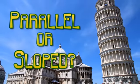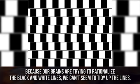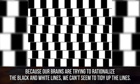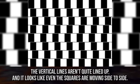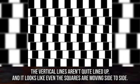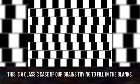Parallel or Sloped. Are these lines parallel or do they slope downwards? Because our brains are trying to rationalize the black and white lines, we can't seem to tidy up the lines. The vertical lines aren't quite lined up, and it looks like even the squares are moving side to side. This is a classic case of our brains trying to fill in the blanks.